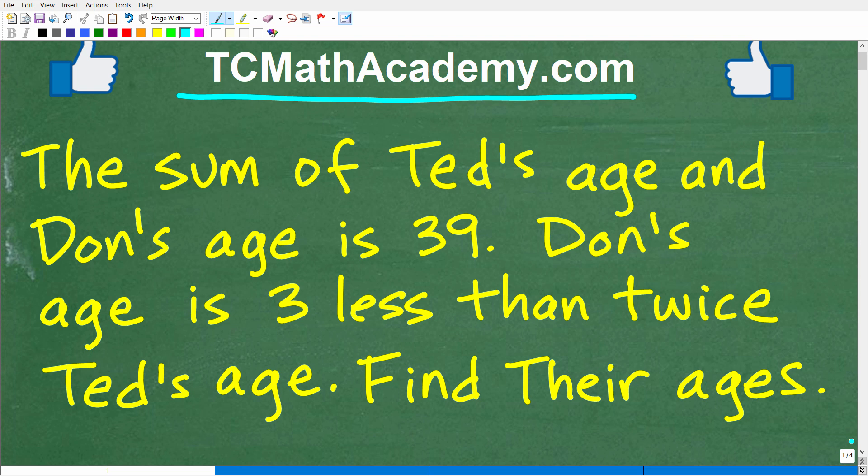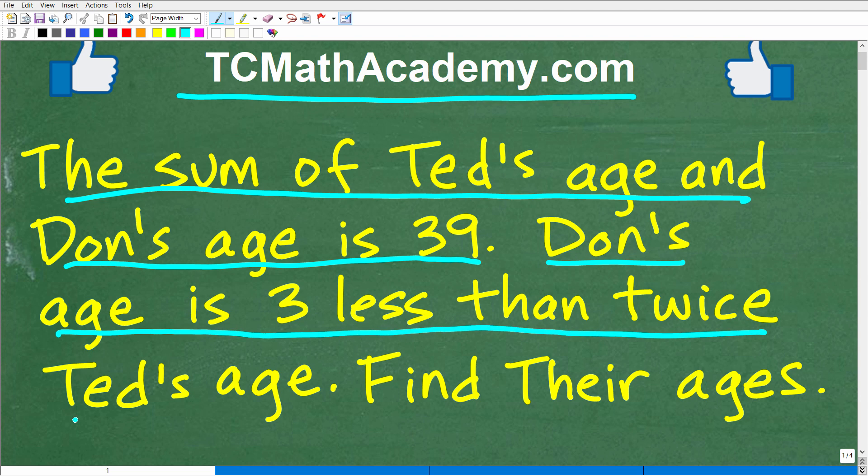The problem is the sum of Ted's age and Don's age is 39. Don's age is three less than twice Ted's age, and what we want to do is find their ages.